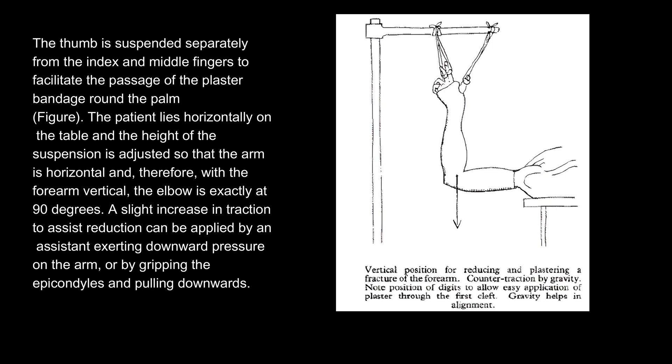The thumb is suspended separately from the index and middle fingers to facilitate the passage of the plaster bandage round the palm. The patient lies horizontally on the table and the height of the suspension is adjusted so that the arm is horizontal and, therefore, with the forearm vertical, the elbow is exactly at 90 degrees.